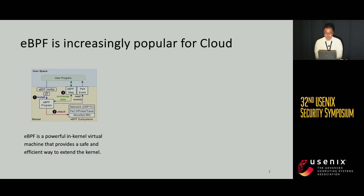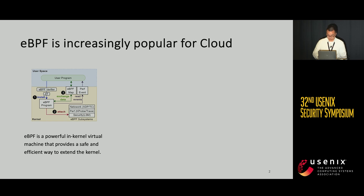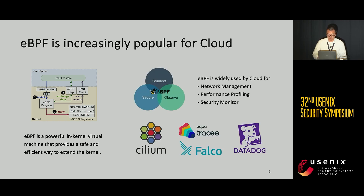First, some background. eBPF is a powerful in-kernel machine that provides a safe and efficient way to extend the kernel. eBPF is widely used by cloud for network management, performance profiling, and security monitoring. Currently, many well-known cloud-native products are implemented via eBPF.